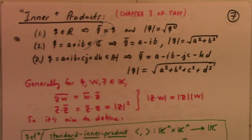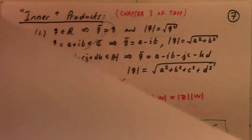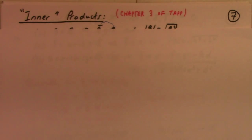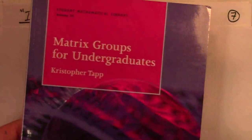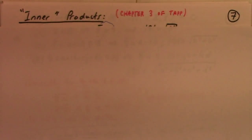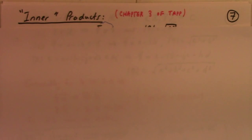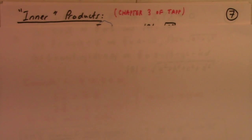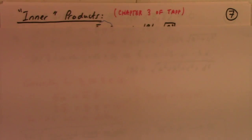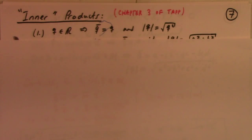Alright, so picking up again here, we'll talk about chapter 3 of TAP, this awesome little book, Matrix Groups for Undergraduates. We'll talk about inner products, quote-unquote, so here's how that goes.